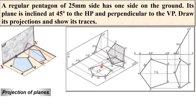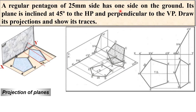Now look at this solution carefully and try to distinguish between these two problems. In one problem the side is actually on the HP, whereas in this case the corner is on the HP. This problem is particularly for one corner on the ground, whereas for this problem it is one side on the ground. If there is one side on the ground, the position of the pentagon in the first stage will be like this. If one corner is on the ground, the pentagon's corner will be on the left side.